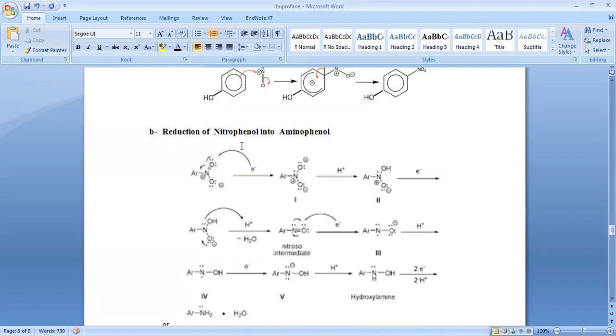Then we will talk about reduction of nitrophenol into aminophenol. This is an aryl group attached to a phenol. Through catalytic hydrogenation, the nitro group is reduced. We will write a concentrated note for this transformation.